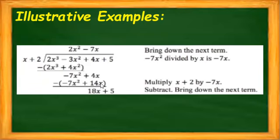And then again, we subtract. Change the sign of our minuend. So it will give us negative 7x squared plus 7x squared, and 4x plus negative 14x. Our answer now is negative 10x. Wait, let me recalculate. 4x minus 14x equals negative 10x. Our answer now is 18x. And then bring down 5 as our next term.